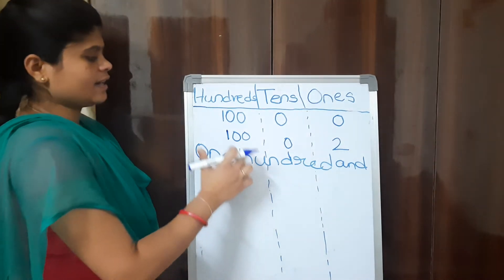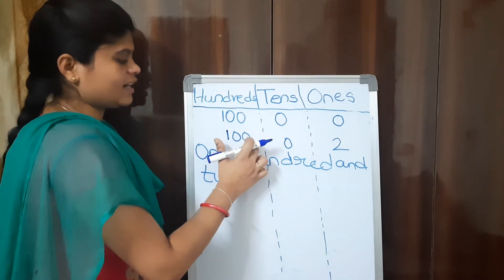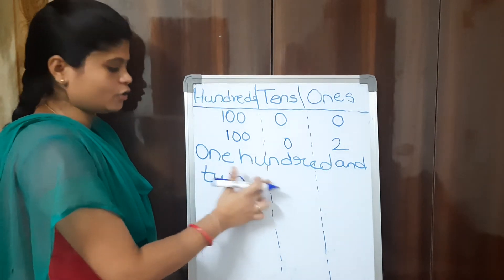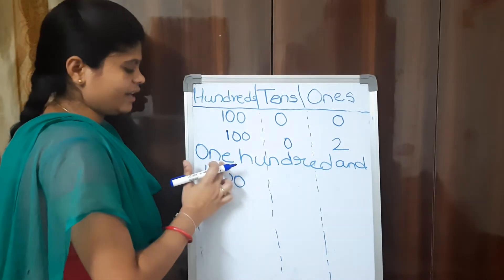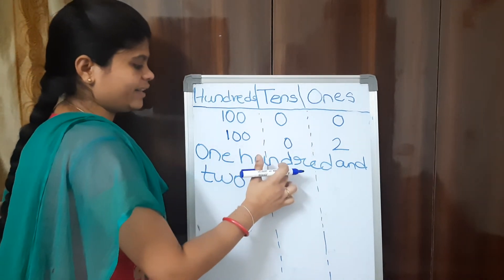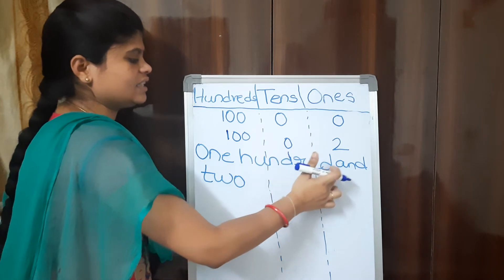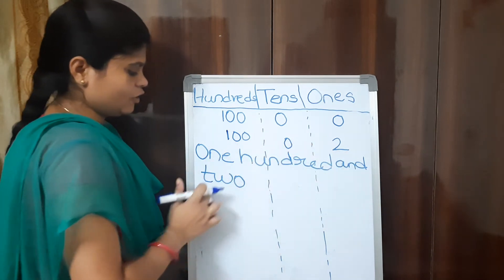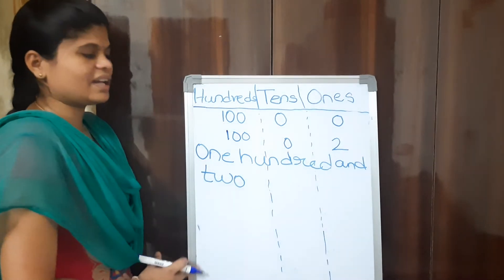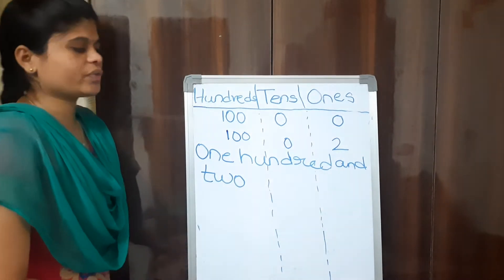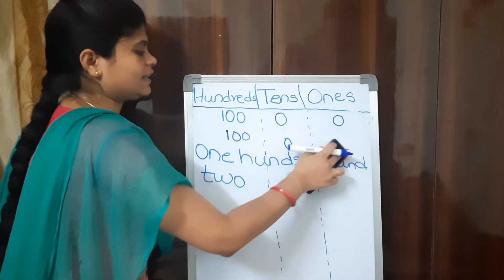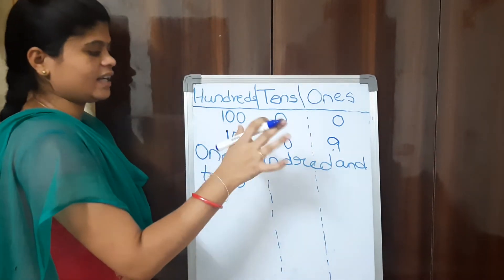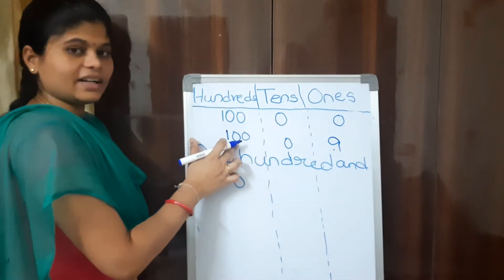This is how we write 102 in place values, and the number name of 102 is one hundred and two. Like this, we can write all numbers till 109. With that, we are finished with 1-digit numbers coming in the 1s place.